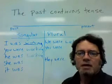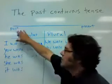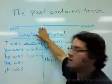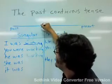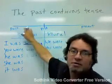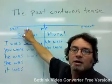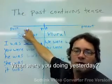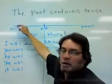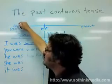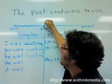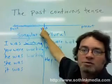The past continuous tense begins in the past and ends sometime in the past. So if this is the past here — let's say this is yesterday — and I ask you, 'What were you doing yesterday?' and you say, 'I was working,' this is a continuous activity: working, working, working... and then you stop.